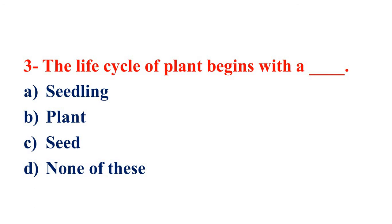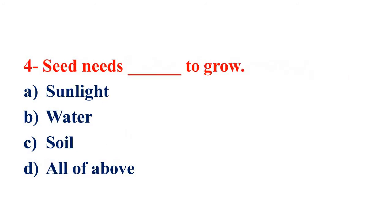Your next question is: the life cycle of a plant begins with a — and your options are: seedling, plant, seed, or none of these. And your correct answer is seed. Next: what do seedlings and plants need to grow? Your options are: sunlight, water, soil, or all of the above.